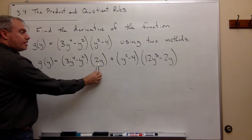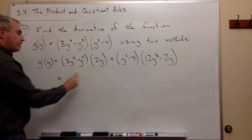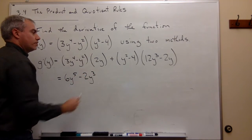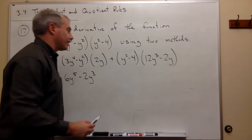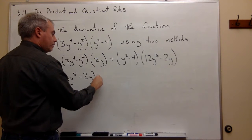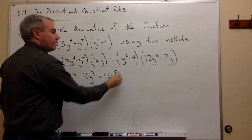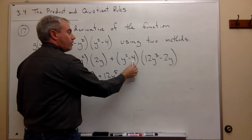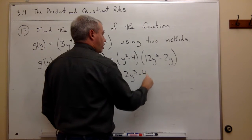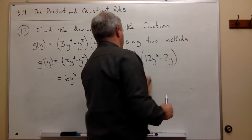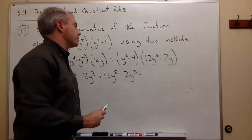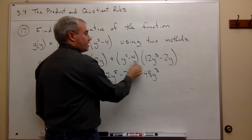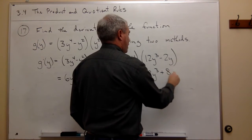So if I multiply through right here by this 2y, let's see what I get. I get 6y^5 - 2y^3. Then I'll foil this out and see what I get. So I get 12y^5. Then I get y^2 times -2y, so -2y^3. Oh, I'm sorry. 4 times 12 is not 4. 4 times 12 is -48y^3. And then -4 times -2 is positive 8y.